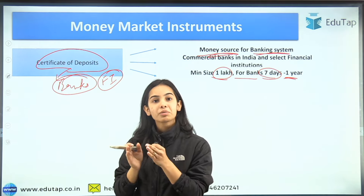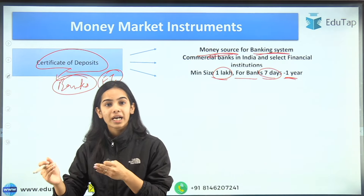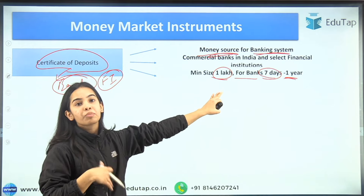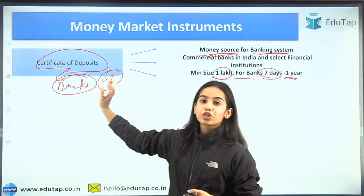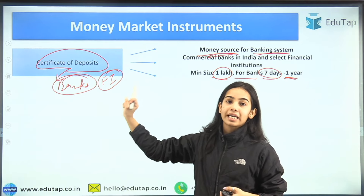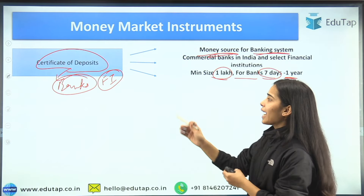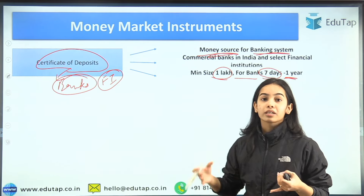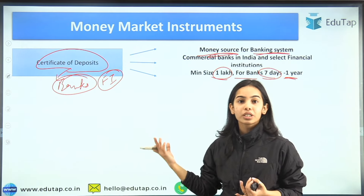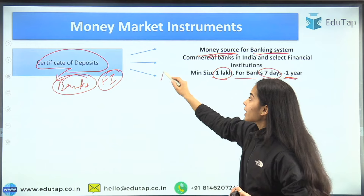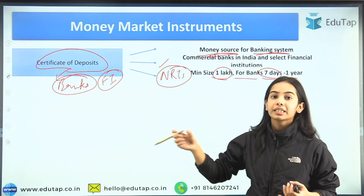Commercial papers are issued by companies with a minimum size of 5 lakh and in multiples of 5 lakh. For certificate of deposits, the minimum size is 1 lakh in multiples of 1 lakh. This is the instrument through which banks raise cash. Anyone can invest in it — retail investors, institutional investors, and even NRIs — but NRIs cannot repatriate their investment.